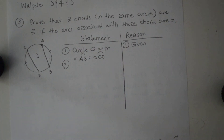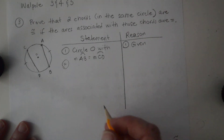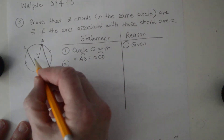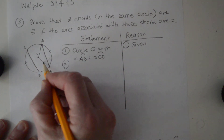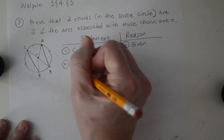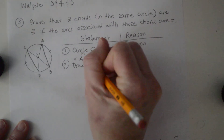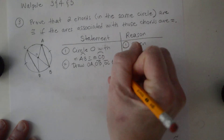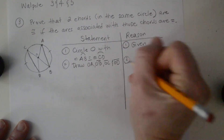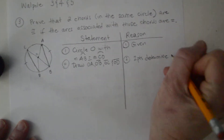For step two, we're going to draw OA, OB, OD, and OC. This is one of those times where the textbook does draw these. The reason we can do that is two points determine a line.